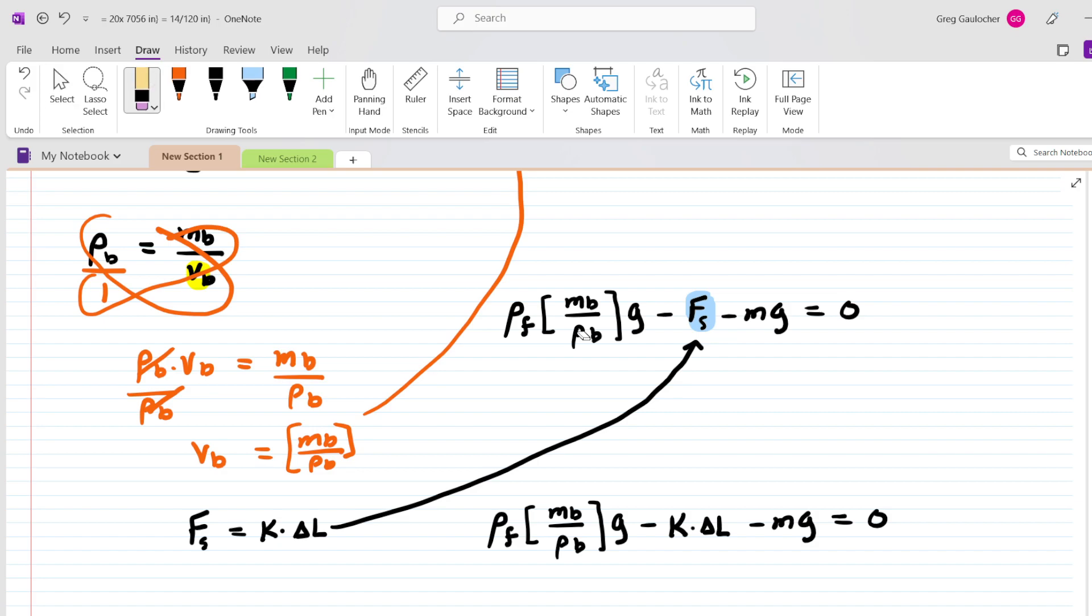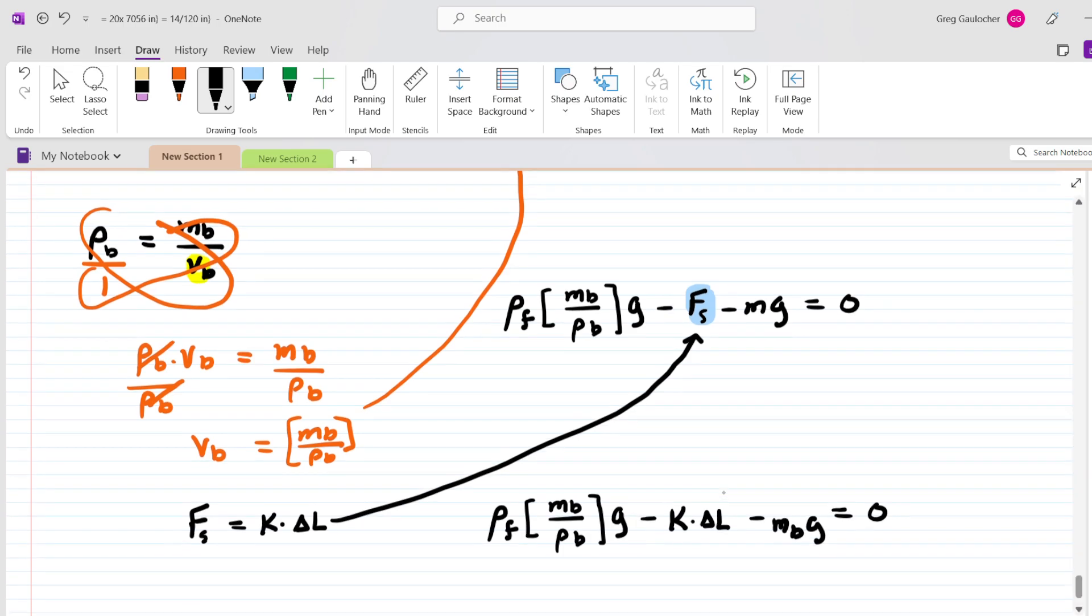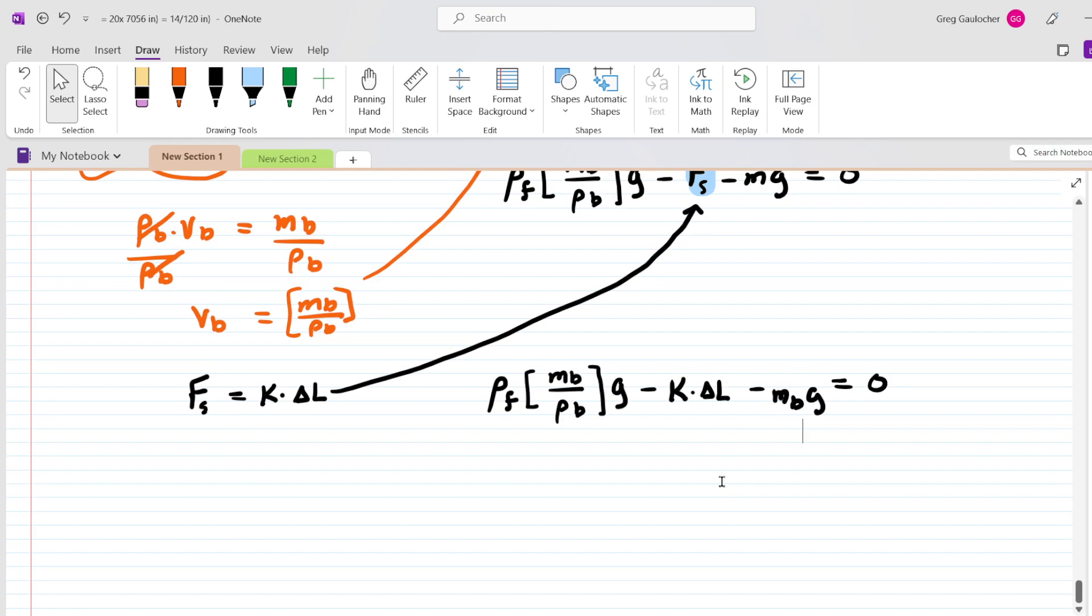We can make one more little tweak to this equation. We have mg written for the gravitational force. That was the gravitational force exerted on the block, so perhaps we can actually use the mass of the block times g rather than just mg. So a little adjustment there to keep the terms consistent. And then now we are prepared to solve for the requested quantity, which is the elongation. So delta L is what we're trying to solve for.